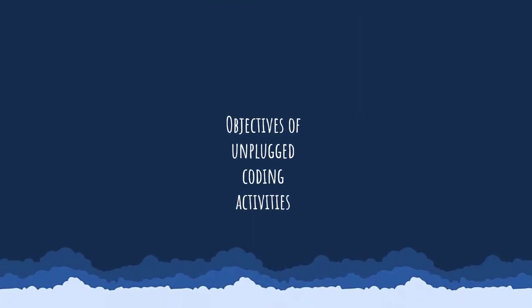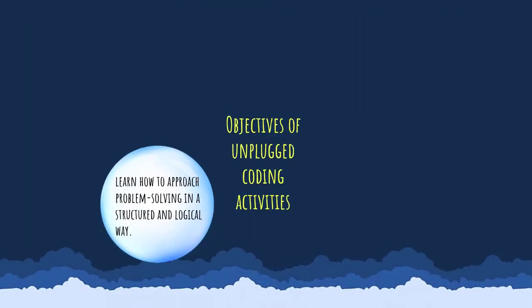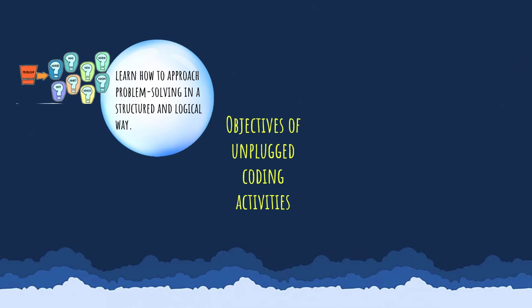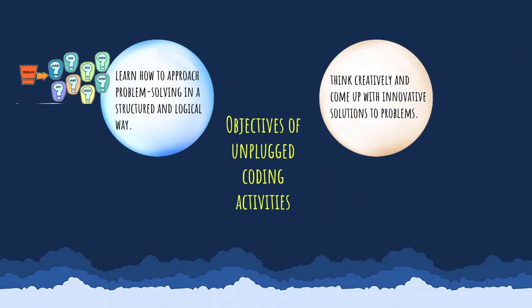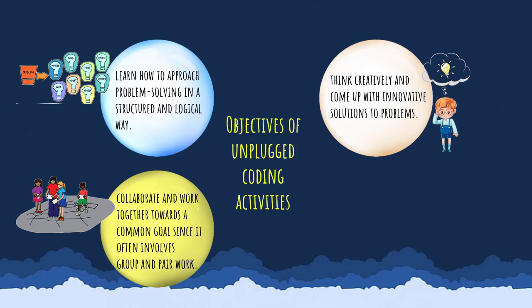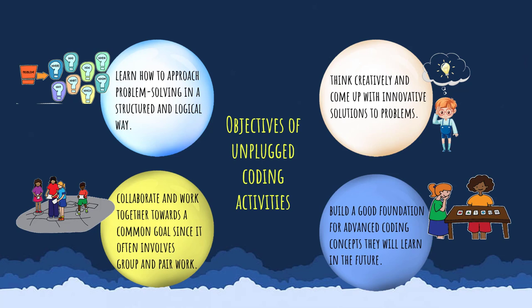Some of the objectives of Unplugged Coding activities: First, learn how to approach problem solving in a structured and logical way. Second, think creatively and come up with innovative solutions to problems. Third, collaborate and work together towards a common goal, since it often involves group and pair work. Fourth, build a good foundation for advanced coding concepts you will learn in the future.